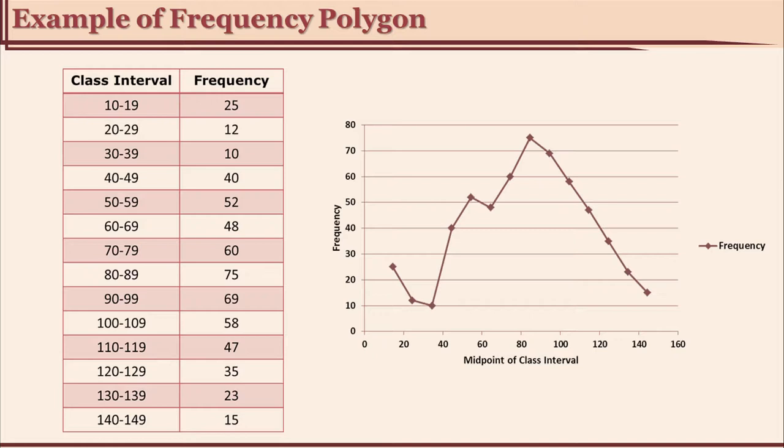It will be somewhere in the first quadrant. So you have to take one more class interval below this — instead of starting from 10 to 19 we will start from 0 to 9, and its frequency is 0. Similarly, the uppermost class interval is 140 to 149, and that frequency also will be in the first quadrant and will not touch the x-axis. So to bring it down to the x-axis you take one more class interval 150 to 159, whose frequency will be 0, and you connect that to the x-axis.